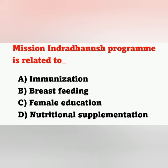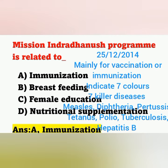Next question: Mission Indradhanush program is related to — options A: immunization, B: breastfeeding, C: female education, D: nutritional supplementation. Option A, immunization, is the correct answer. Mission Indradhanush was started on 25 December 2014, mainly focused on immunization and vaccination. It uses seven colors representing seven killer diseases: measles, diphtheria, pertussis, tetanus, polio, tuberculosis, and hepatitis B.